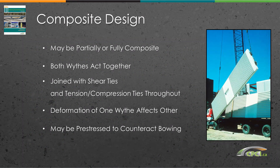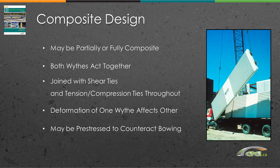Composite panels may be designed as partially or fully composite; however, the degree of composite action is very difficult to determine. In composite panels, both wythes act together to provide a much stiffer and stronger panel. To achieve composite action, shear and tension-compression ties are required throughout. With composite panels, the deformation of one wythe affects the other. To counteract this, pre-stressing is common and can also reduce some of the thermal bowing effects.